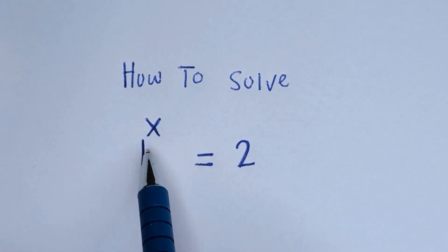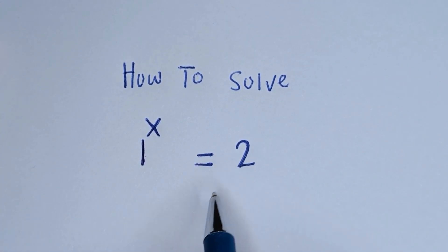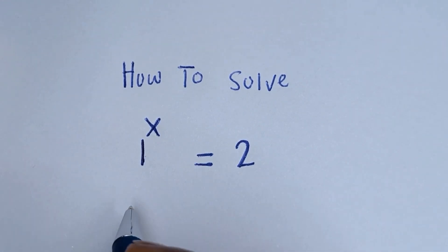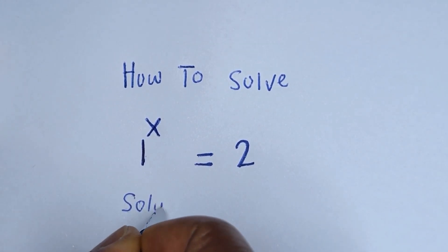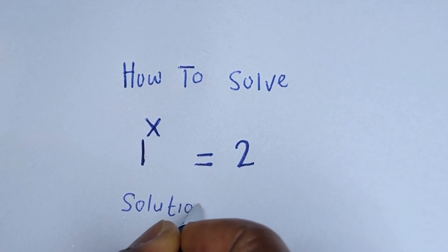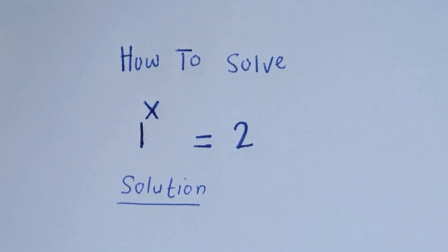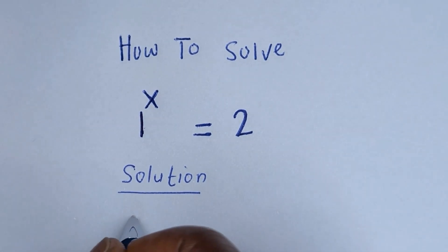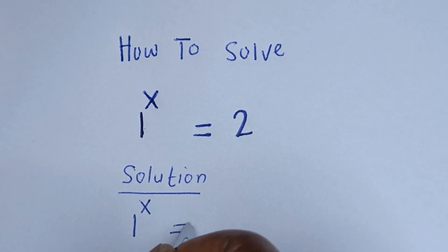How to solve for s in this equation: 1 raised to the power s is equal to 2. We have 1 raised to power s is equal to 2.